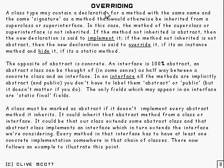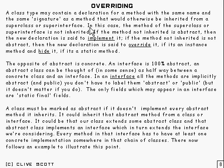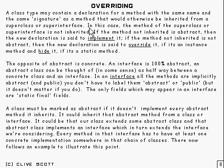Now we come to overriding, and this is quite an important concept. Suppose you've got a method declared in a class and it's got the same name and the same signature as a method which you would otherwise normally expect to inherit from a super class or super interface. By signature, what I mean is it takes the same argument types in the same order.